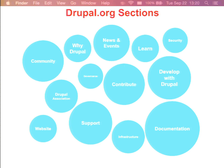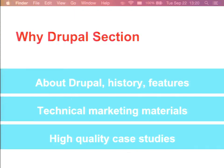We have so many sections I can't talk about all of them, so I'll give a few examples. 'Why Drupal?' will be a section for people who evaluate Drupal — essentially a set of high-quality marketing materials. Right now, we don't really have good marketing content on the website; what we do have is in book pages and it's not very exciting or engaging. This section would have content about Drupal, its history, features, technical marketing materials, and high-quality case studies.